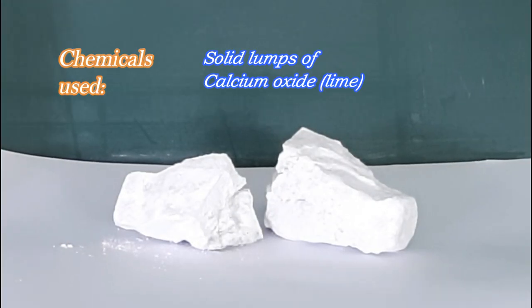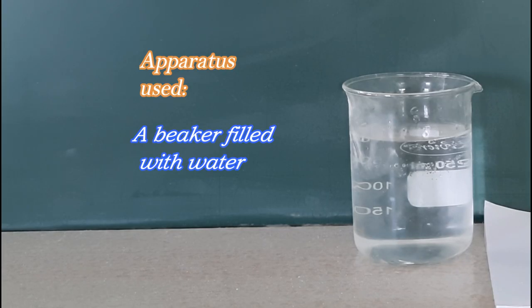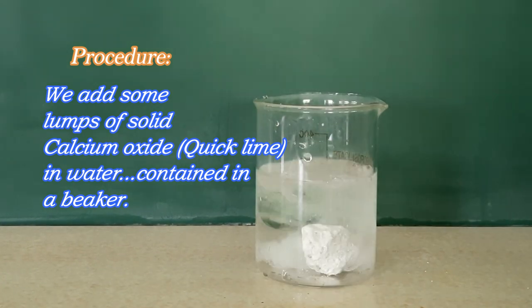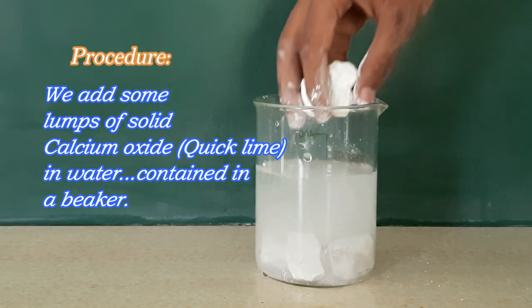Chemicals used: solid lumps of calcium oxide or lime. Apparatus used: a beaker filled with water. We add some lumps of solid calcium oxide or quick lime in water contained in a beaker.